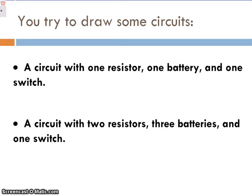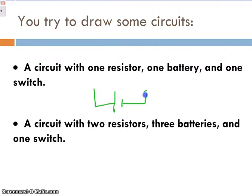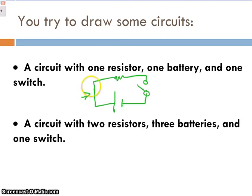Now that you've paused it, let's see what we've come up with. It says a circuit with one resistor, one battery, and one switch. It can look a number of different ways — your switch doesn't have to be on the exact same path that mine's on. You could have had a switch here, your resistor here, your switch up by your resistor — but the most important thing is we have a nice continuous pathway.